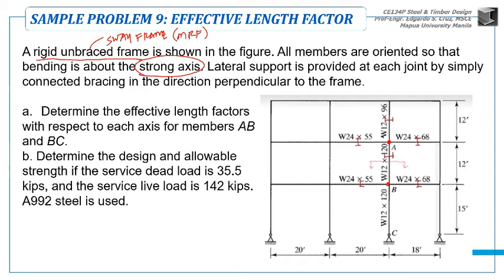At joint A, there's a girder on the right and a girder on the left. The girder on the right, the W24 by 68, is oriented like this - the section is standing up because it's strong axis.